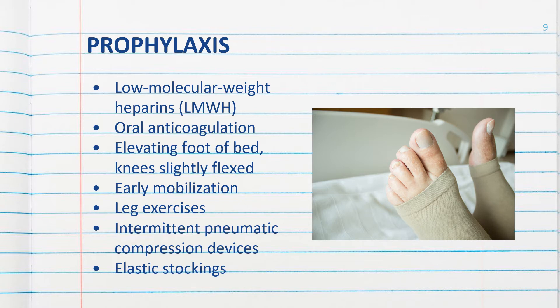Warfarin doses are adjusted to maintain an INR greater than 2.0. Other preventive measures include elevating the foot of the bed with only a slight knee flex. Leg exercises including flexing, pointing, and circulating the ankles — both passive and active range of motion — as well as intermittent pneumatic compression devices and elastic stockings all help to promote venous return.